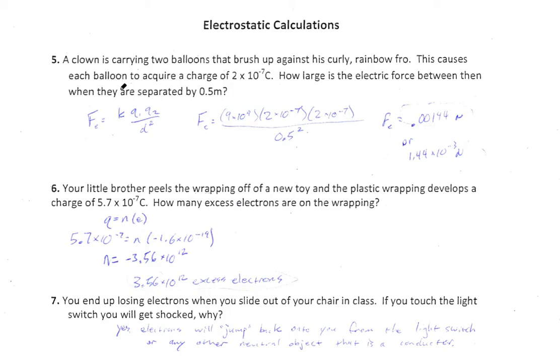What is this? Page 9 by now? Electrostatic calculations here. So a clown is carrying two balloons that brush up against his curly rainbow fro. This causes each balloon to acquire a charge of 2 times 10 to the negative 7th coulombs. How large is the electric force between them when they are separated by 0.5m? We know we're dealing with F equals KQ1Q2 over D squared, or Coulomb's law problem here.